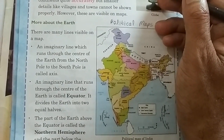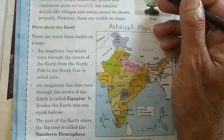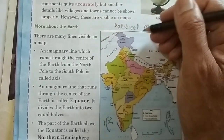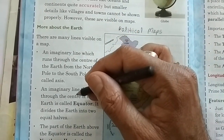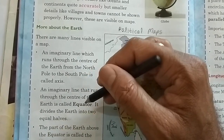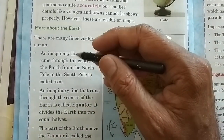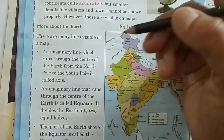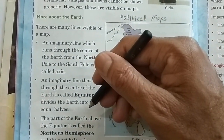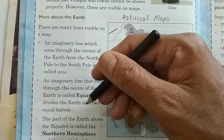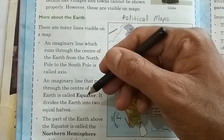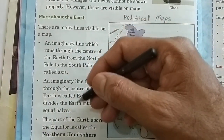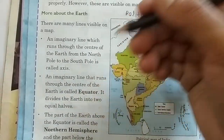What is a hemisphere? Half part of the Earth is a hemisphere. The line running through the center of the Earth is called the equator. The line running through the center of the Earth from North Pole to South Pole is called axis. Equator divides the Earth into two equal parts: northern hemisphere and southern hemisphere.